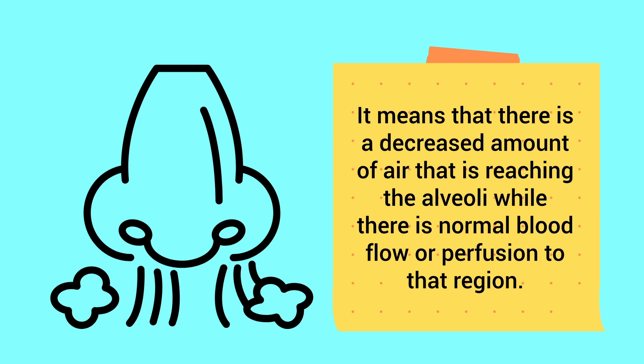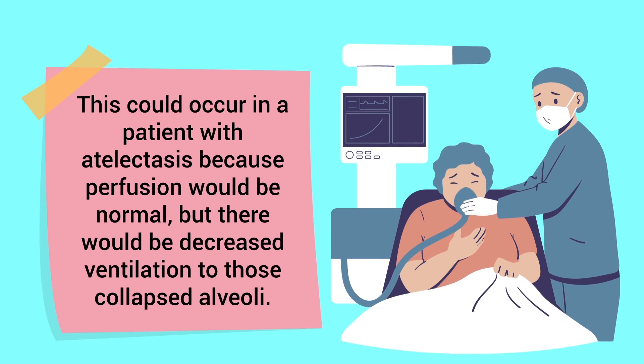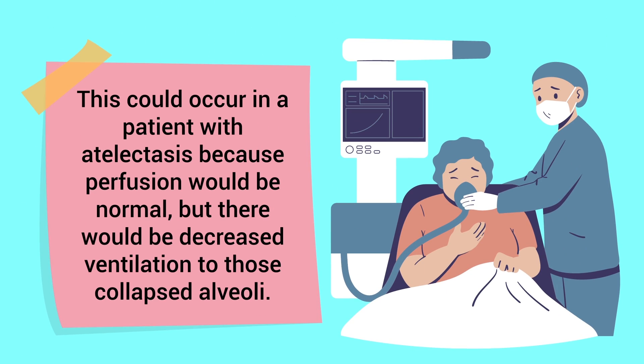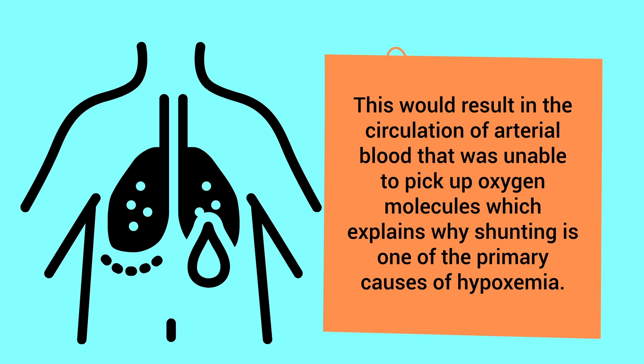For example, this could occur in a patient with atelectasis, because perfusion would be normal but there would be decreased ventilation to those collapsed alveoli. This would result in the circulation of arterial blood that was unable to pick up oxygen molecules, which explains why shunting is one of the primary causes of hypoxemia.